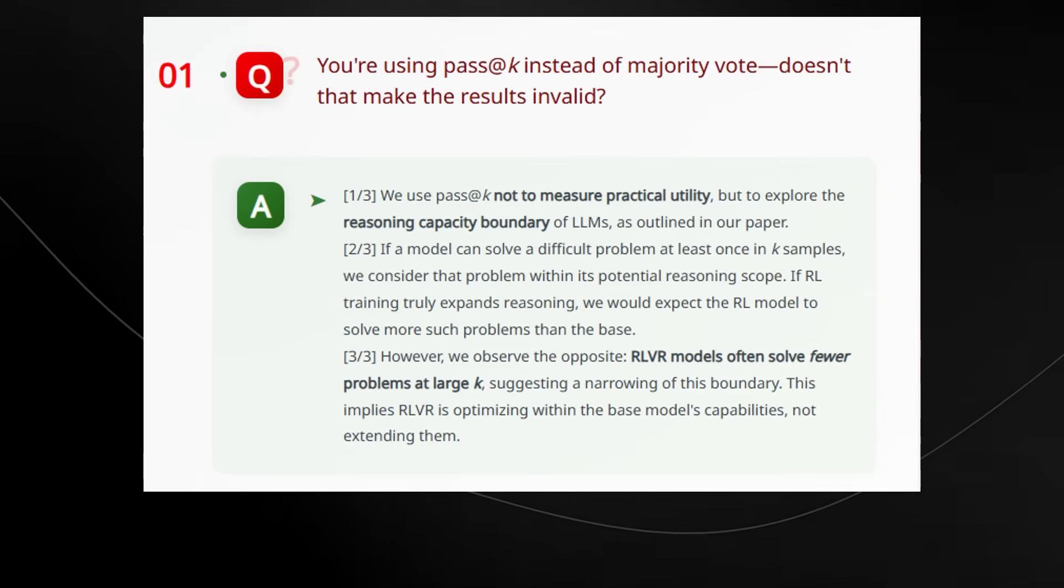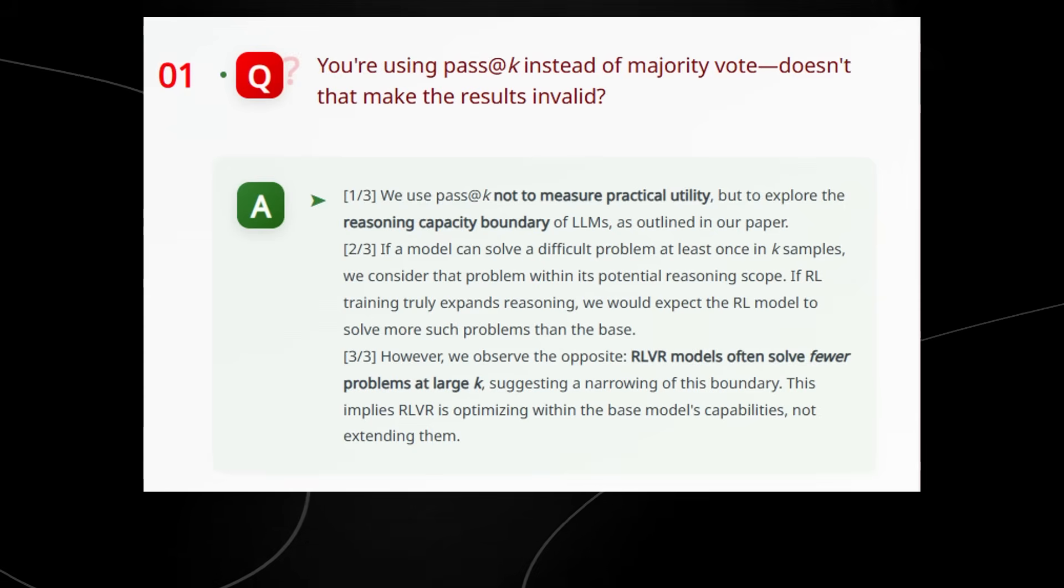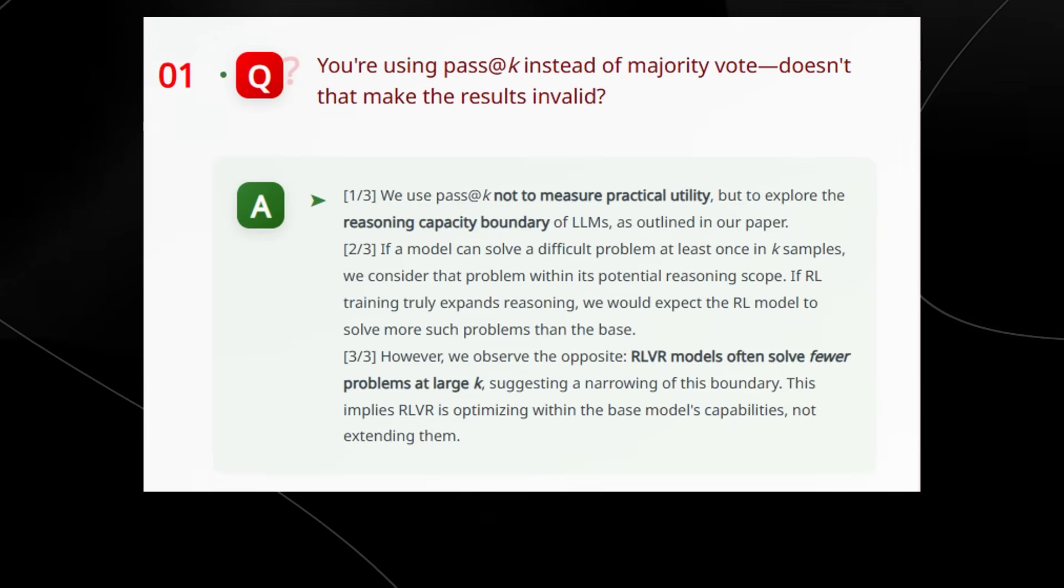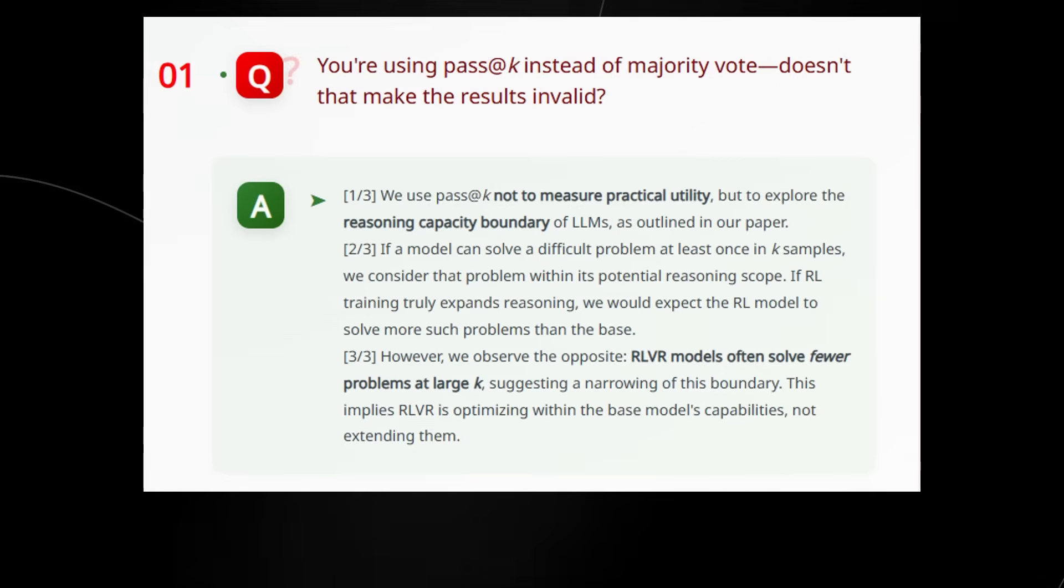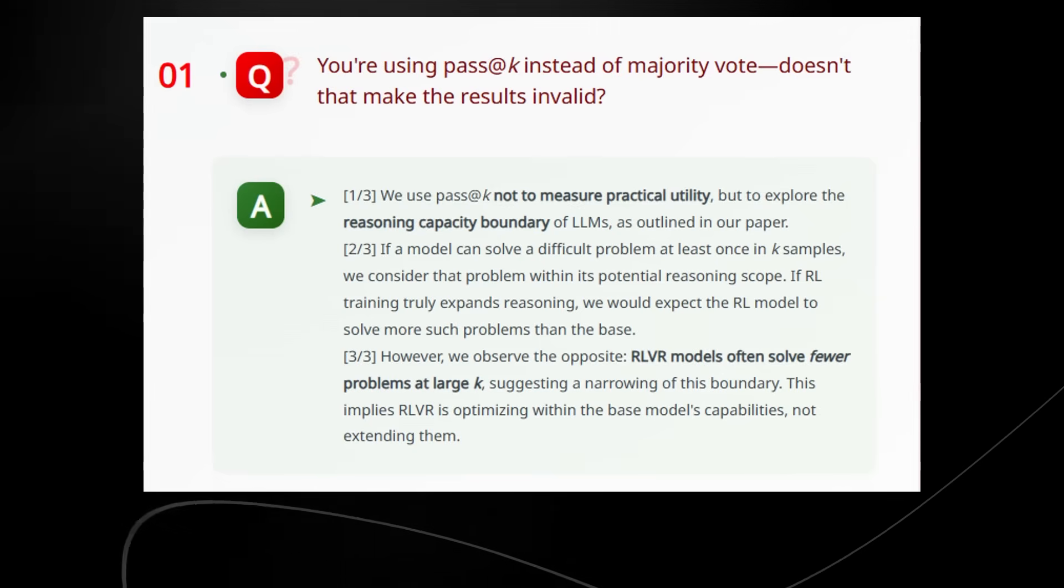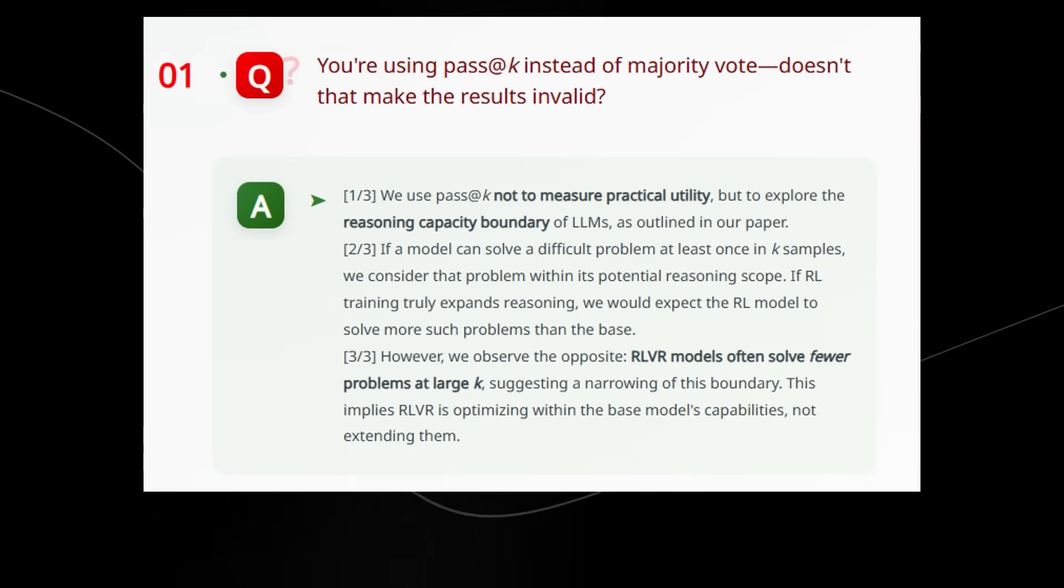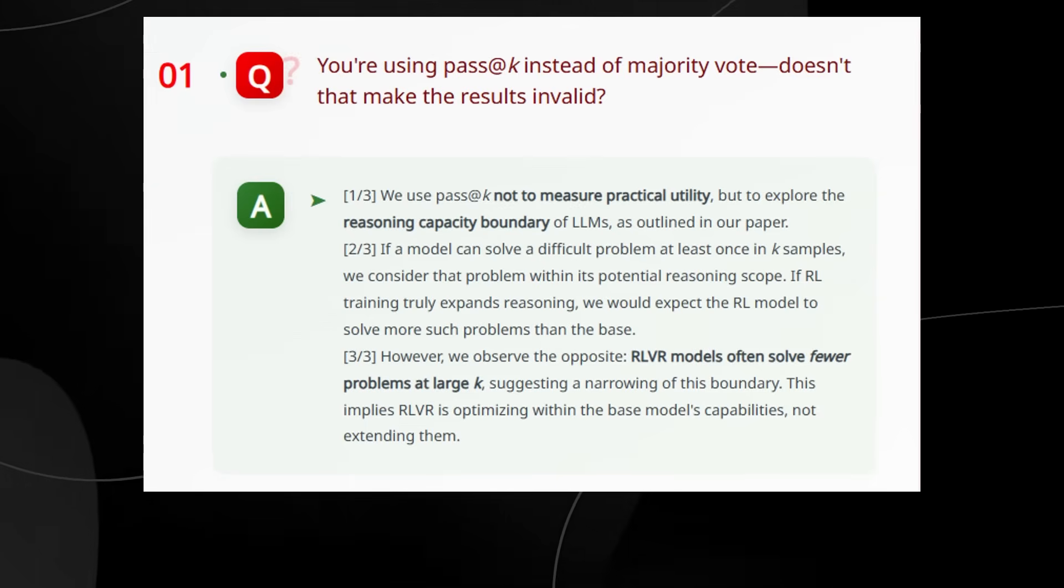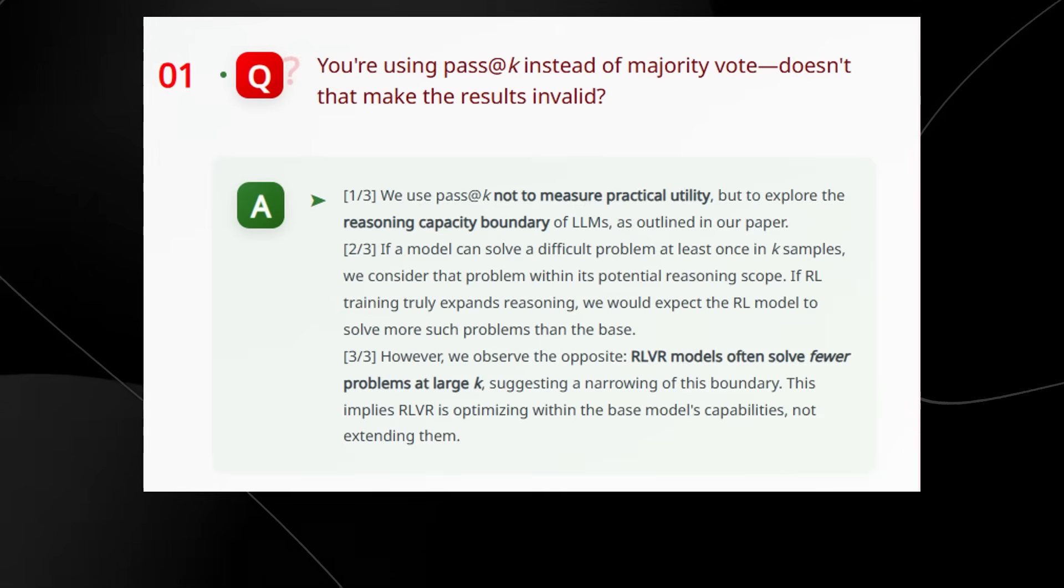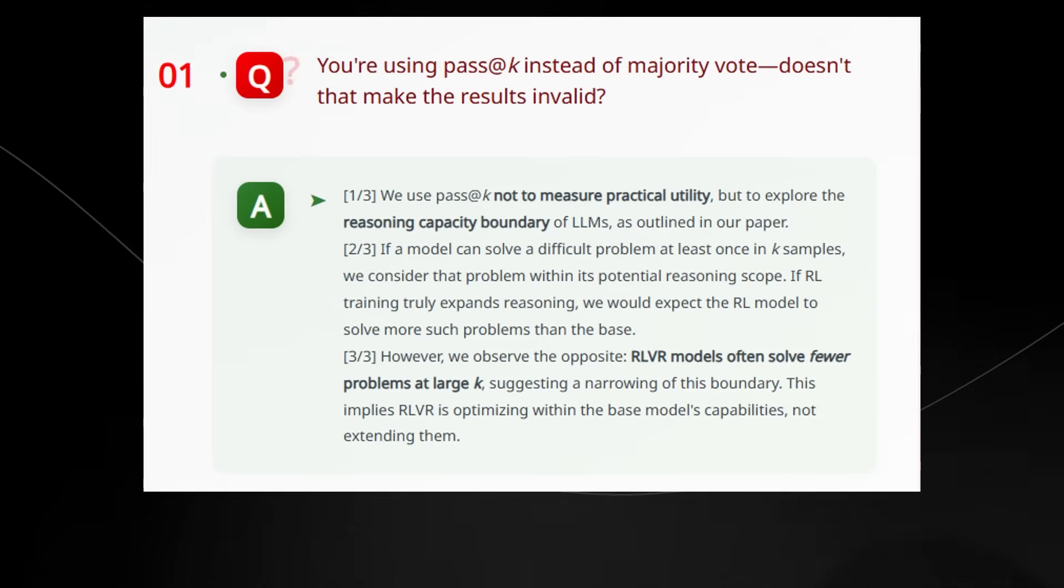And what is pass at k? Remember, like we discussed before, if the model is allowed to guess k times and one of those guesses is right, it gets a point. It's basically a way to guess a model's maximum capability, not its average or majority choice. Their reasoning is essentially that if reinforcement learning really makes the model smarter, then at large k, when you give the model lots of chances, the reinforcement learned model should solve more problems than the base model. But the opposite actually happens.